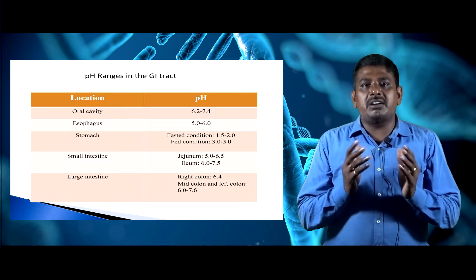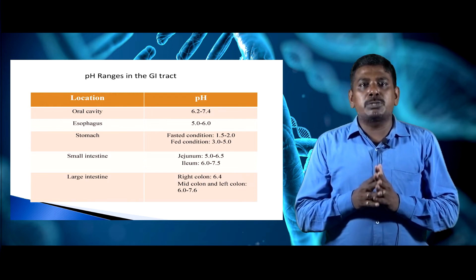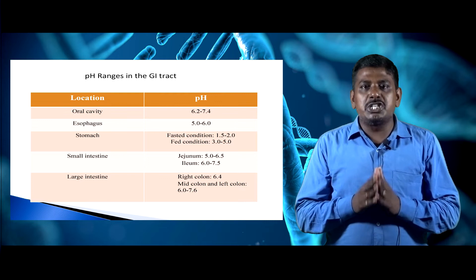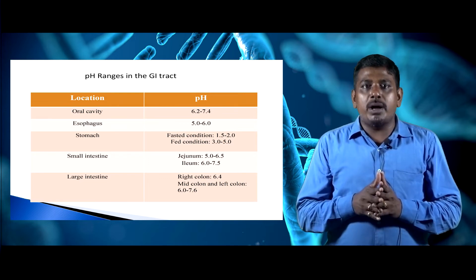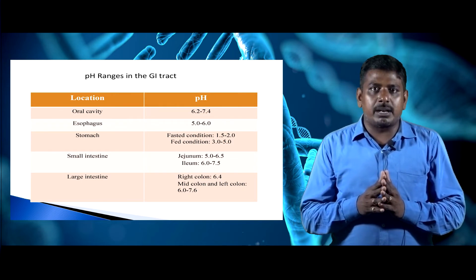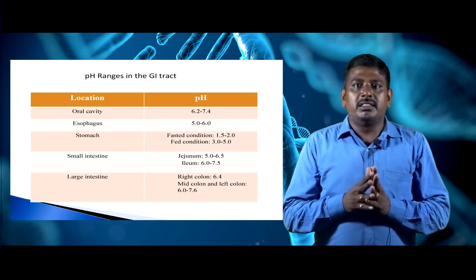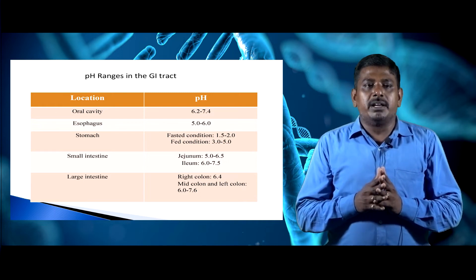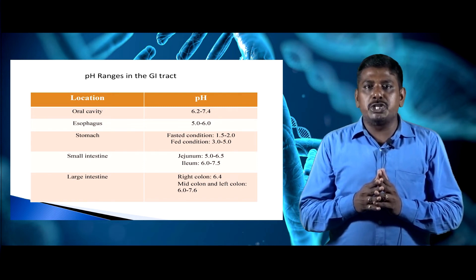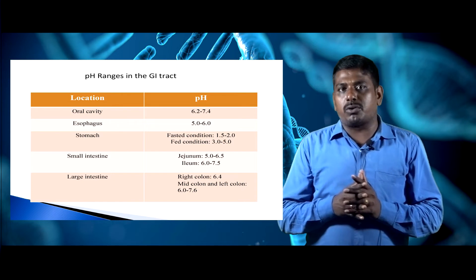The pH of the gastrointestinal tract varies by region. The oral cavity is 6.2 to 7.4, esophagus is 5.0 to 6.0. The stomach under fasted conditions — meaning before food, on an empty stomach — is 1.5 to 2.0, and under fed conditions — after food — is 3.0 to 5.0. The small intestine jejunum pH is 5.0 to 6.5; the jejunum is also called the upper portion of the small intestine.